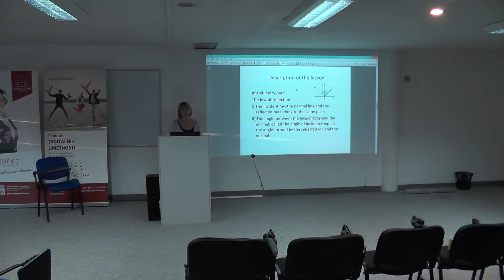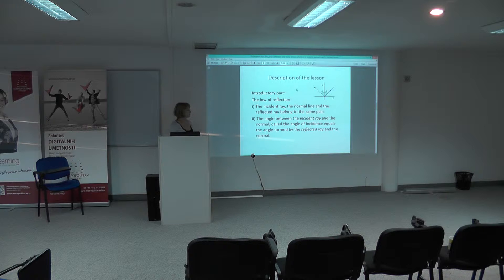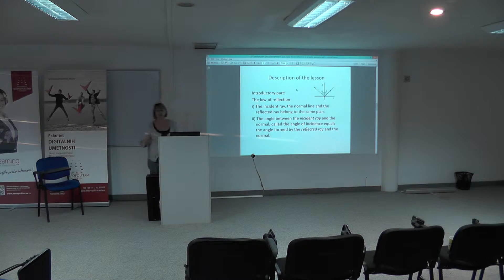In analytic geometry in high school, students work with analytic geometry in two dimensions. If we have mirrors, we have three dimensions, but this part is important because the incident ray, normal line, and the reflected ray all belong to the same plane. So instead of three dimensions, we can do everything in two dimensions.